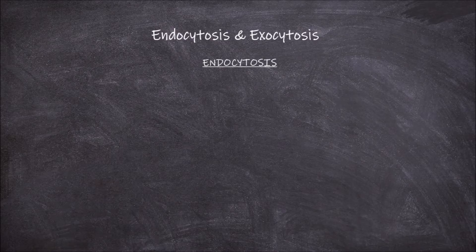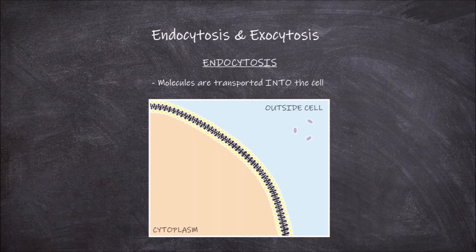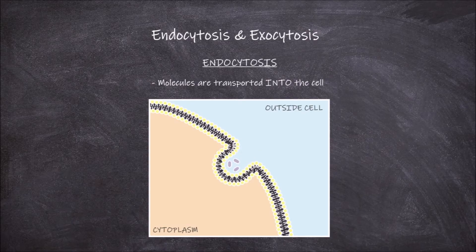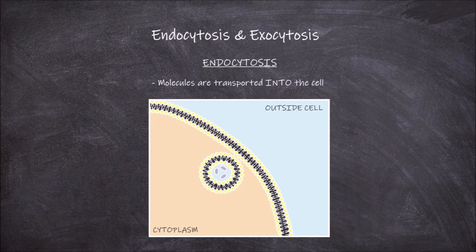Endocytosis is the process where molecules are transported into the cell, by the molecules being engulfed into vesicles made from the cell membrane. The first step involves the material that is going to be engulfed moving closer to the cell membrane. The second step involves the membrane creating a depression surrounding the material. The depression eventually seals and buds off, creating a completely enclosed vesicle containing the molecules now inside the cell. The outer layer of the cell membrane becomes the inner layer of the vesicle, and the inner layer of the cell membrane becomes the outer layer of the vesicle. This vesicle is now able to move through the cytoplasm.